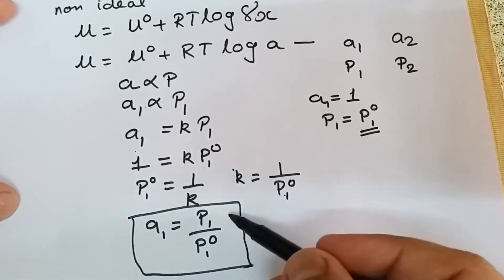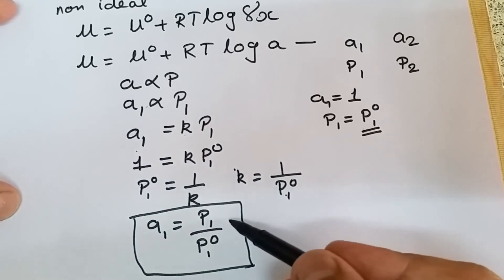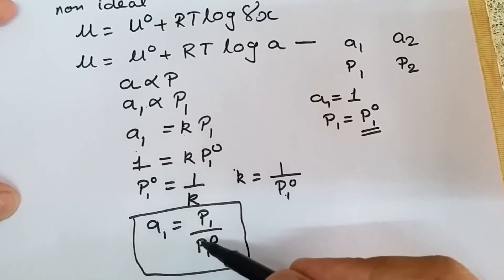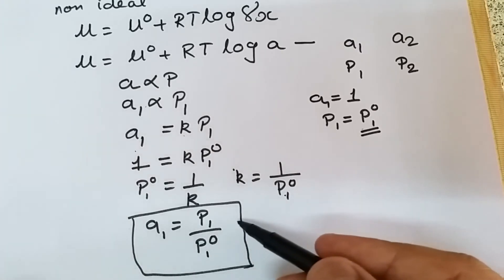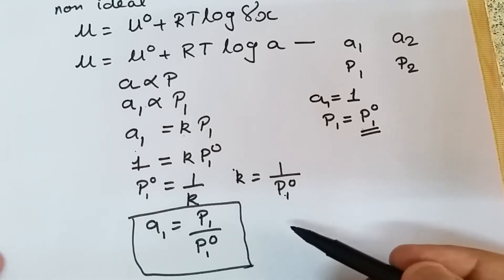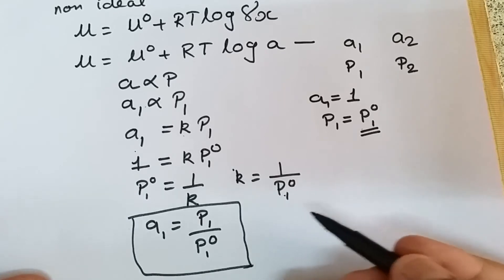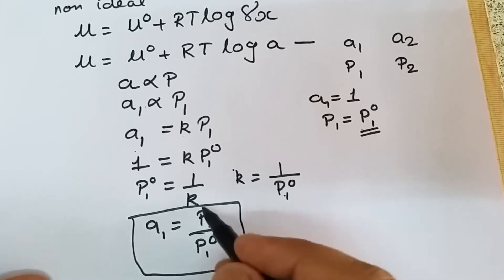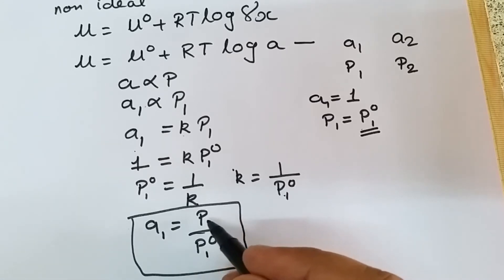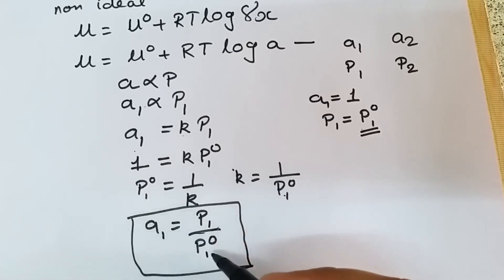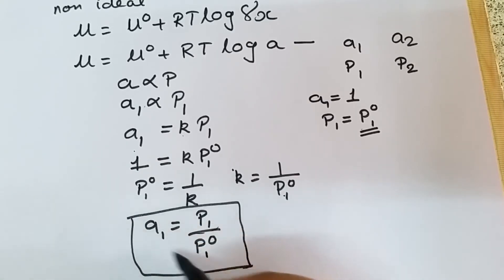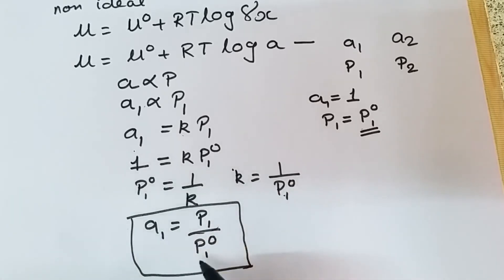We can find the vapor pressure p₁ when we have the solution, and the vapor pressure in the pure state p₁° is already known. For example, if we mix methanol and ethanol, taking methanol as solvent and ethanol as solute, we can find p₁ and divide by p₁° to get the activity. From activity, the activity coefficient γ can also be calculated very easily.